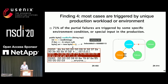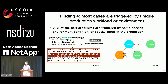Another finding is 71% of partial failures are triggered by some specific environment condition or special input in production. For example, for one ZooKeeper case to trigger, we must have a corrupted packet received during deserializing the record length, and the corrupted value has to be a very large integer. For another case, we must have a follower hanging but not crashed when it is in the process of joining the quorum. This kind of failures are very hard to expose or reproduce in non-production environments.